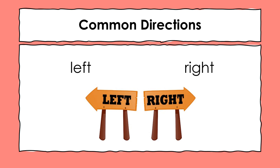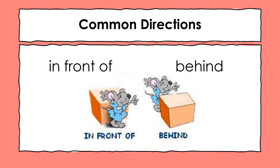The most commonly used directions are left and right, and here are two arrows pointing towards left and right. Apart from left and right, we also use 'in front of' and 'behind' very commonly. Here is a picture of two mice standing at different places near a box. In the first picture the mouse is standing in front of the box, whereas in the second picture the mouse is standing behind the box.